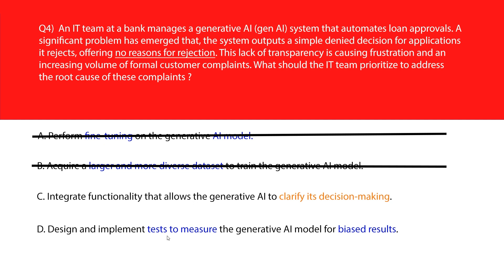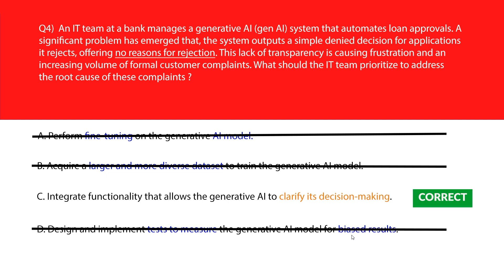Option C enables the AI to provide clear justifications for its output. Option D says design and implement tests to measure the gen AI model for bias. Fairness audits check for bias but don't provide applicants with individual justifications — wrong answer. We'll lock option C as the correct choice.